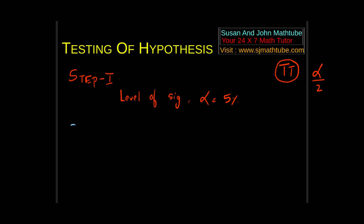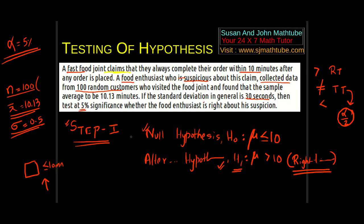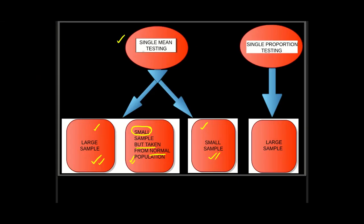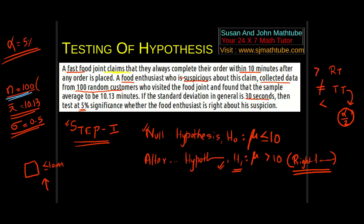Now comes step number 3, the most important one. So let's go back and check the map. Now look at this. This is single mean testing. The reason is we are talking about only one parameter, that is time. And now the second thing. I already noted from the question, N is 100. So it is large.